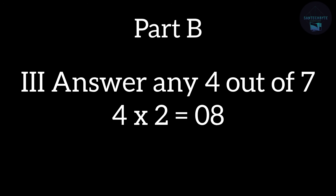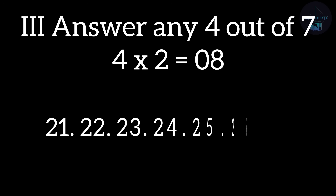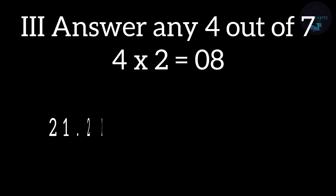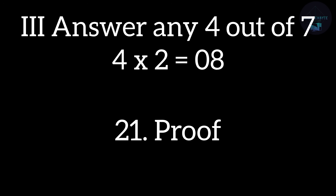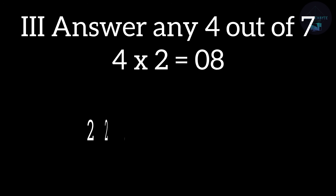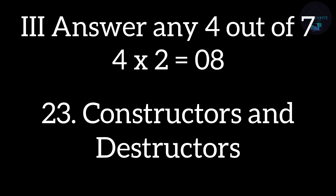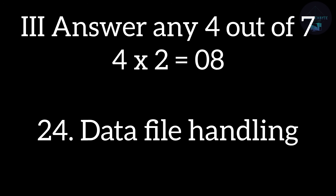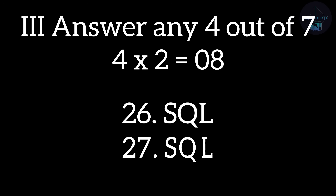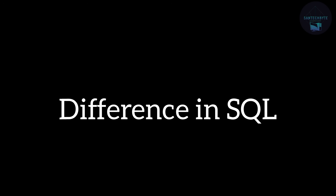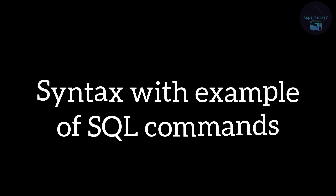Coming to Part B — you will have 7 questions and must answer any 4 out of 7. Each question carries 2 marks. Question numbers go from 21 to 27: Question 21 is a proof (perfect induction or LHS equals RHS); Question 22 from Logic Gates; Question 23 from Constructors and Destructors; Question 24 from Data File Handling; Question 25 from Database Concepts; Questions 26 and 27 from SQL — they may ask differences between DROP and DELETE, or ALTER and UPDATE, or syntax of DDL and DCL commands.